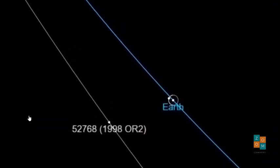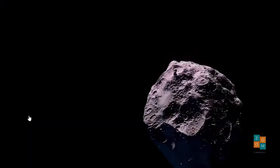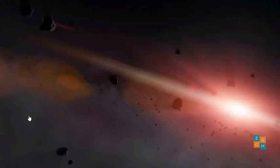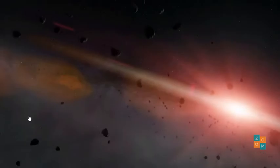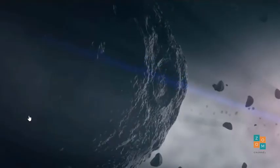Asteroid to pass by Earth at a close 3.9 million miles away. Current projections show that when it flies by again in 2079, it'll be much closer, only about four times the distance from Earth to Moon.